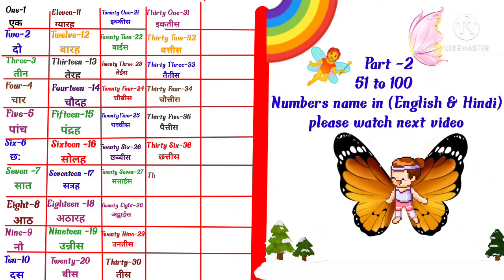T-H-I-R-T-Y S-E-V-E-N, 37 means thirty-seven. T-H-I-R-T-Y E-I-G-H-T, 38 means thirty-eight.